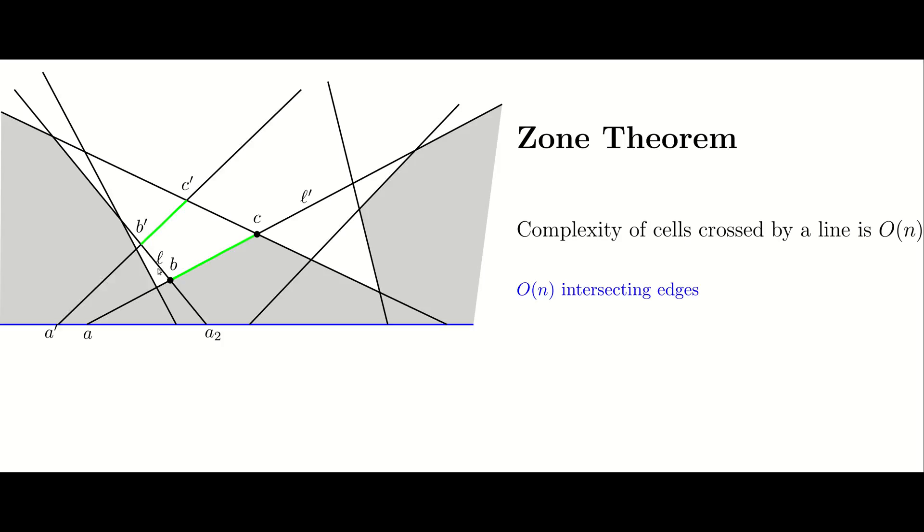Similarly, we can show that there can be at most one left segment for the line L and thus the total complexity of the zone will be linear.